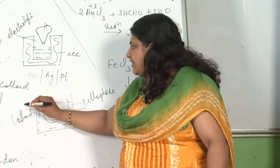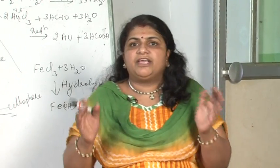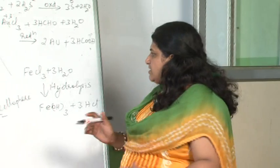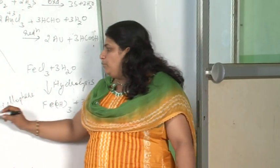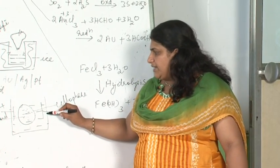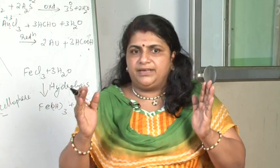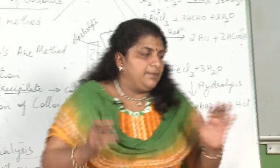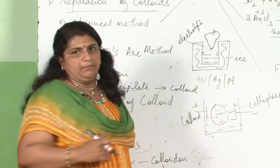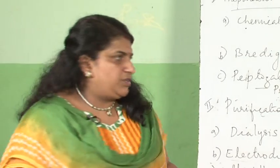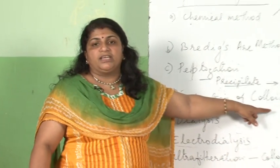The speed of dialysis can be increased by keeping two electrodes inside the system — this apparatus is called a dialyzer. Inside the dialyzer, one positive and one negative electrode are placed, because dissolved impurities in the dispersion medium carry either positive or negative charge. The ions will move fast from inside to the outside under the electric field, so the dialysis process will be faster. This process is called electrodialysis — the process of dialysis made faster by passing electricity.